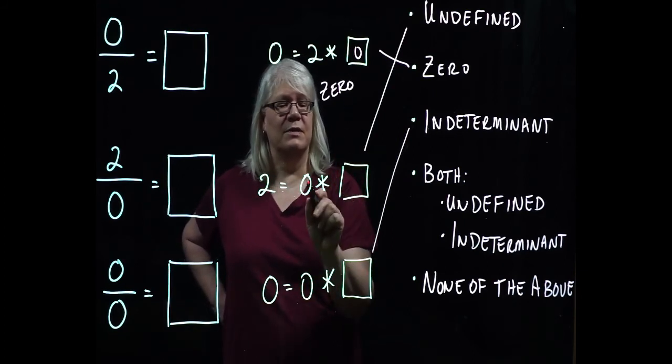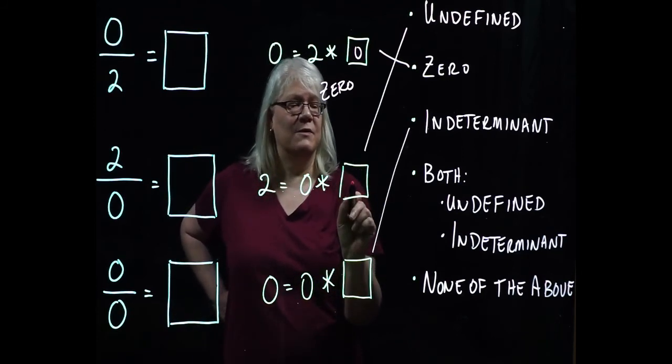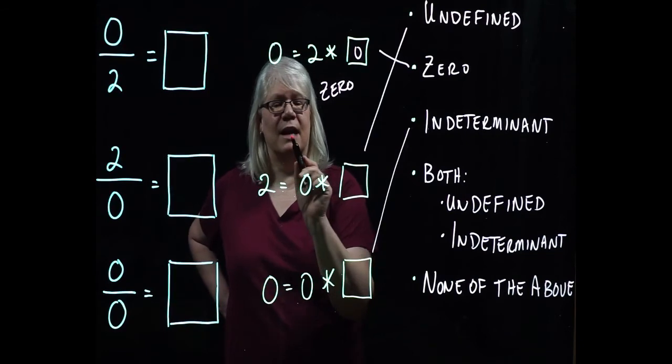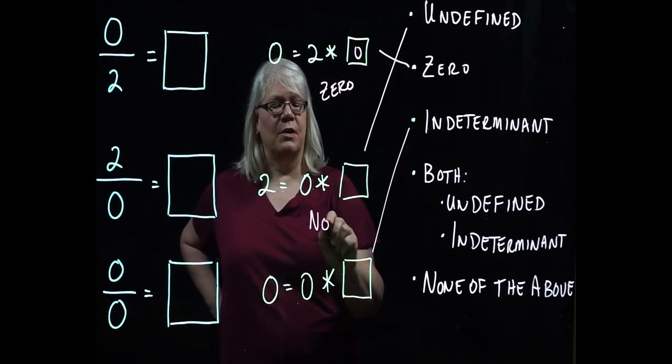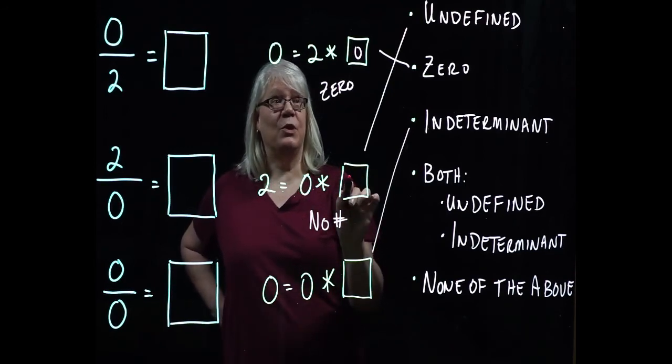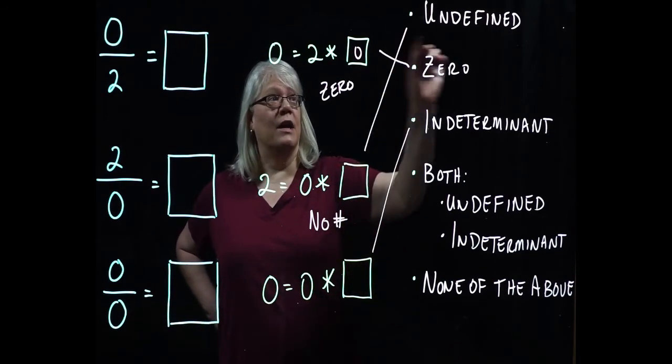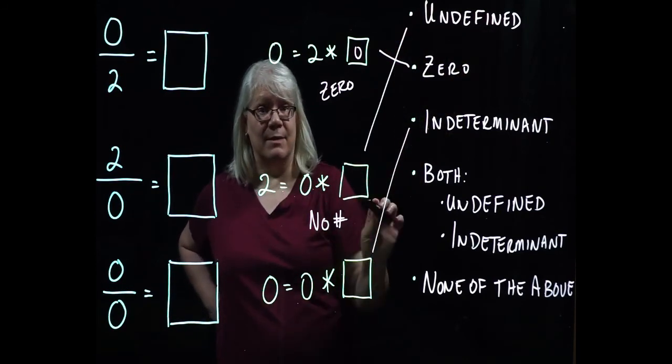So there isn't a single number here that I can put in to give me two as a result. So I put seven, seven times zero, not two, but zero. If I put in minus five, minus five times zero is not two, but zero. So there is no number that exists in the real number system that I can put in there. So we call that undefined because there is no number that's defined that makes that statement true.